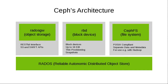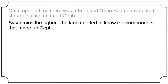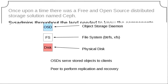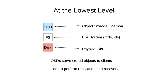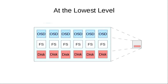And there's the CephFS file system. Sysadmins throughout the LAN needed to know the components that made up Ceph. At the lowest level you've got a physical disk. On top of that there's a file system — you don't see inside that, it's managed by Ceph. On top of that there's an object storage daemon, or OSD for short. OSDs serve stored objects to clients, and they peer with each other behind the scenes to perform replication and recovery. You put several OSDs in one node — it's just a Linux server with Ceph installed and a bunch of disks.